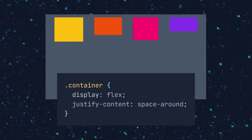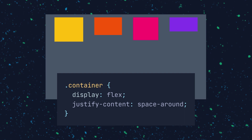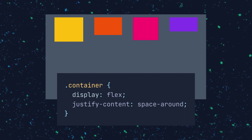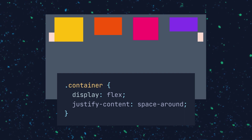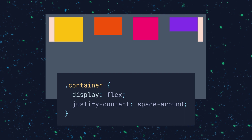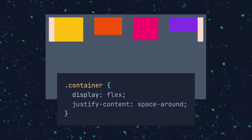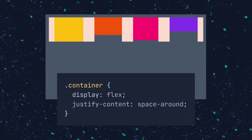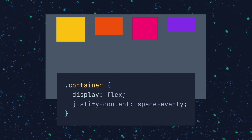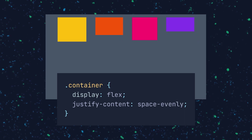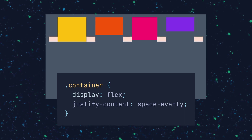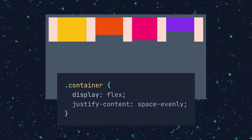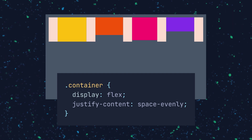The space-around property distributes the items with equal space around each individual item. This means the first and last items' outermost edges have one unit of space, while the inside spaces have two units. The space-evenly property distributes the same amount of space between each item, including the space around the first and last items' outermost edges.